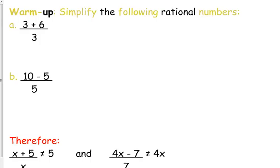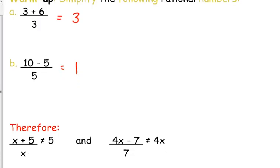Everybody can tell me that that first answer is 3, and then that second answer is 1. We're good with that, but for some reason, when we put variables in there, in the case of x plus 5 over x, you want to cancel the x and say that equals 5.